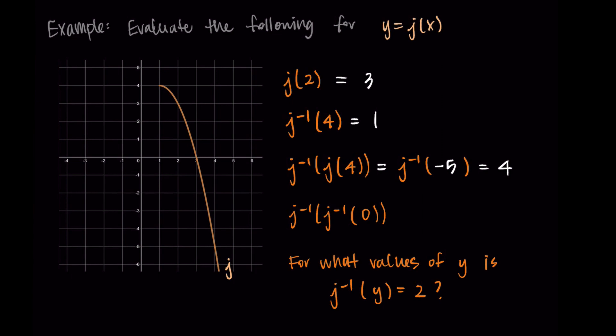Now for j inverse of j inverse of 0: here the inverse is applied twice, so the answer will likely differ from 0. Starting inside with j inverse(0): 0 is a y value corresponding to x = 3, so j inverse(0) = 3. Now j inverse(3): 3 is a y value corresponding to x = 2, so j inverse(3) = 2. Therefore j inverse of j inverse of 0 equals 2.